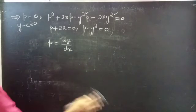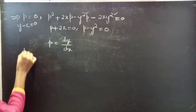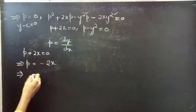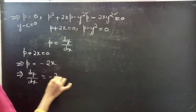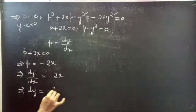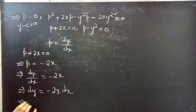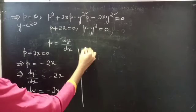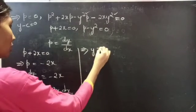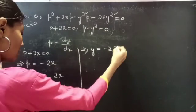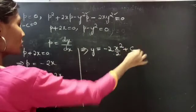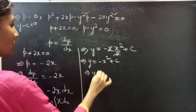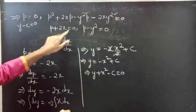Now consider the second equation: P plus 2x equals zero, which gives P equals minus 2x. Putting P equals dy/dx, we get dy equals minus 2x dx. Integrating both sides: y equals minus 2x times (x squared over 2) plus C, and cancelling the 2 gives y equals minus x squared plus C. This can be written as y plus x squared minus C equals zero, which is the solution for P plus 2x equals zero.